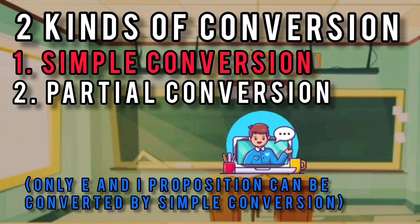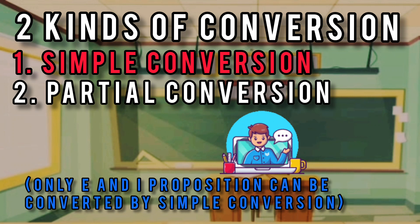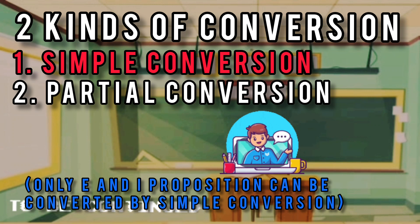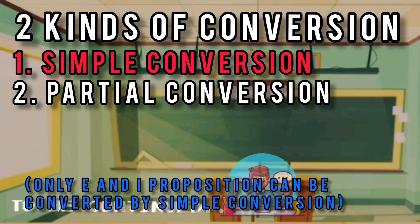On the other hand, conversion is partial if the quantity of the proposition is reduced from universal to particular. In simple conversion, we do not touch both the quality and the quantity. But there are only two symbols — E and I — that may be converted applying the rules of simple conversion. When we talk about partial conversion...